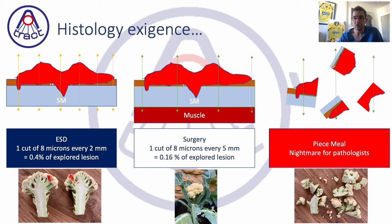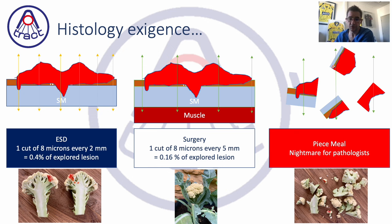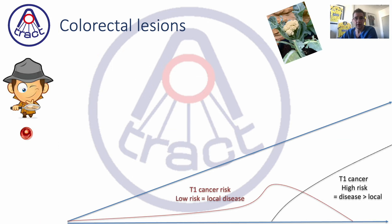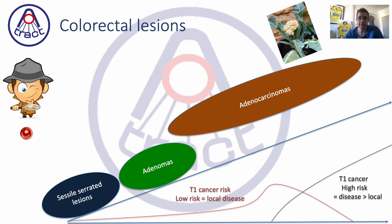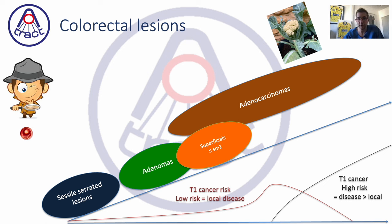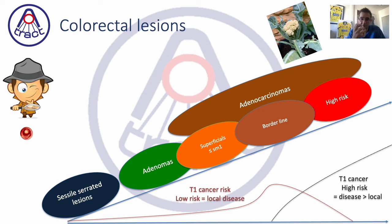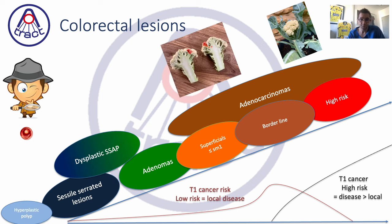With piecemeal resection, pathologists cannot be sure of the depth of invasion, or of missed budding, missed lymphovascular invasion, or undifferentiated type components. For a cancer, having R0 resection is better to avoid missing information that could lead to adjuvant treatment. Lesions in the colon are very difficult to characterize — there is a lot of gray between adenomas, intramucosal carcinoma, shallow T1 cancer, borderline cancer (T1 deep invaded, more than 1000 microns), and irresectable cancers (T2, T3, or T1 with pejorative factors like lymphovascular invasion, budding, or undifferentiated component).